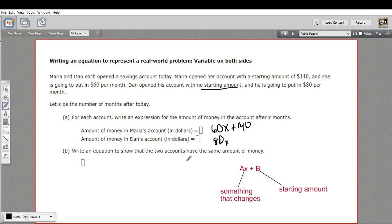Now we want to write an equation to show that the two accounts have the same amount of money. So at some point, they're going to be equal. There'll be an equal amount of money in here. If we wanted to know when that is, we could set them equal to each other.